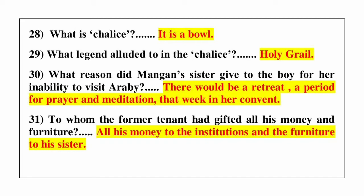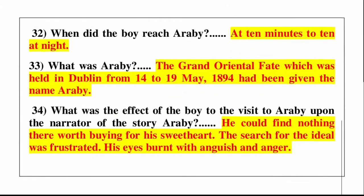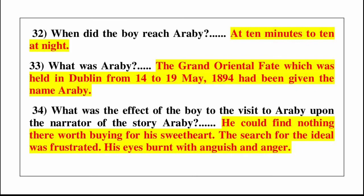Question number 31: to whom did the former tenant gift all his money and furniture? Answer is all his money to the institution and the furniture to his sister. Question number 32: when did the boy reach Arabi? Answer is at 10 minutes to 10 at night.